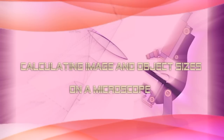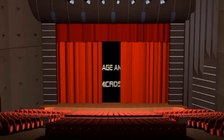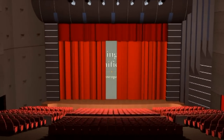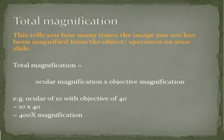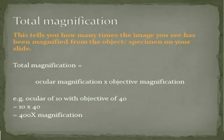This little video will show you how to make use of a microscope to calculate the size or the magnification of whatever it is that you're looking at. So firstly let's just define what total magnification is. Total magnification is the number of times that the image you see when you look down the lenses has been magnified in comparison to whatever it is that's sitting on your slide.